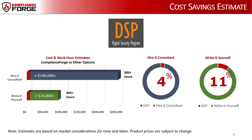If you hire a consultant to generate equivalent documentation, it would take them an estimated 800 consultant work hours, which equates to a cost of approximately $240,000, and take approximately 6 to 12 months of development time. When you look at it from the raw numbers perspective, the DSP is approximately 4% of the cost of a consultant, and 11% of the cost of trying to generate the documentation in-house.